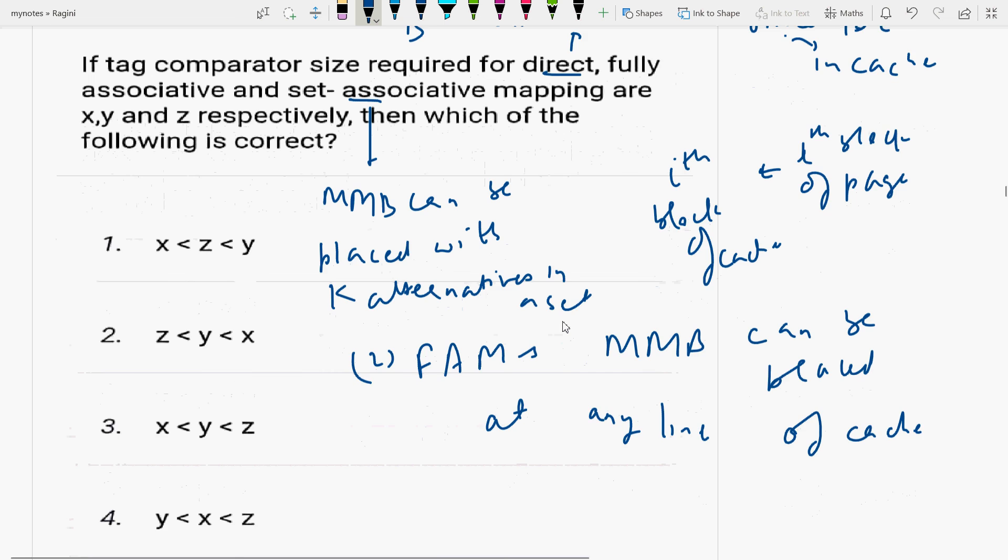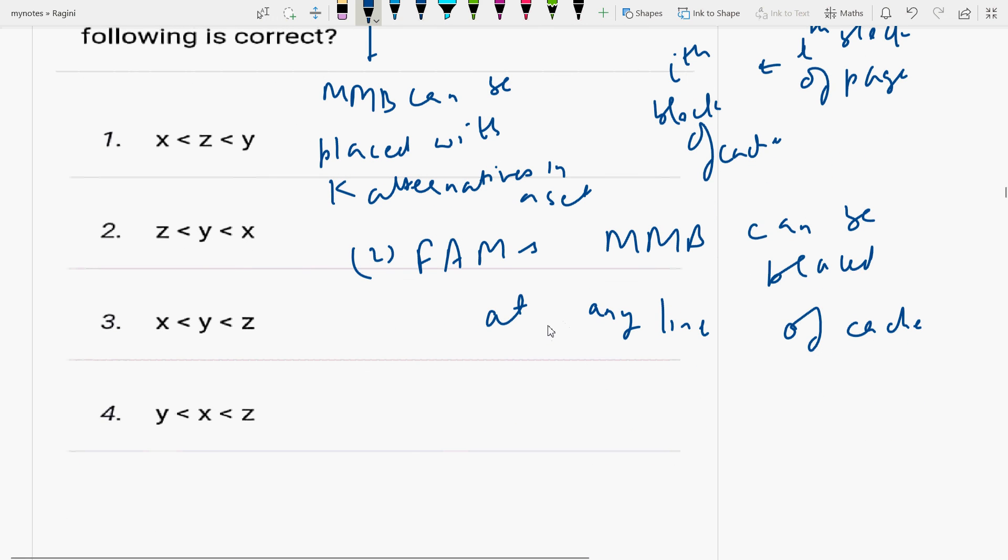The explanation is that number of tag bits are maximum in fully associative mapping and minimum in direct mapping. The size of tag comparator is directly proportional to the number of tag bits.